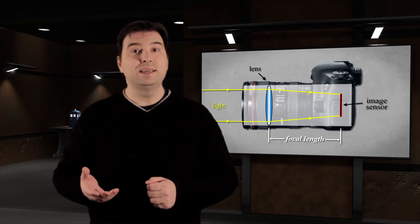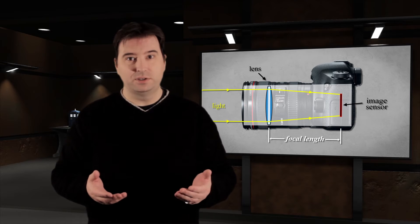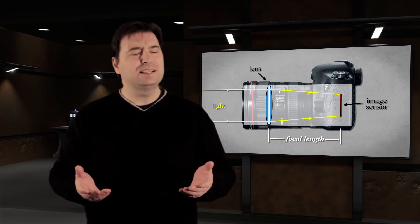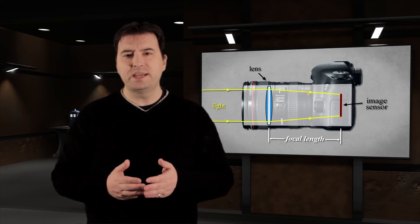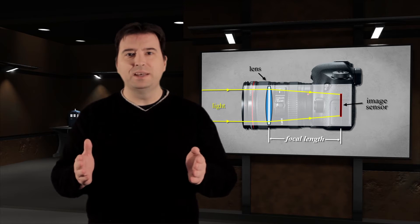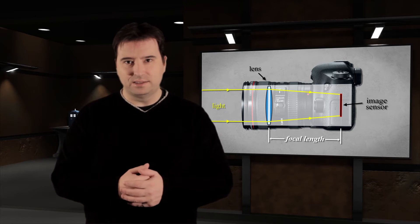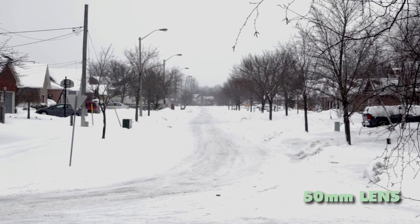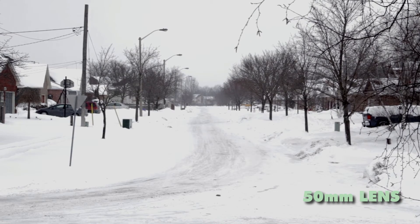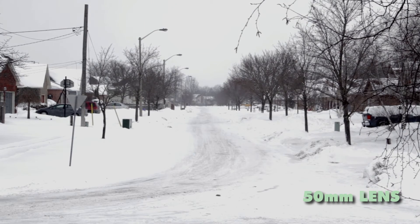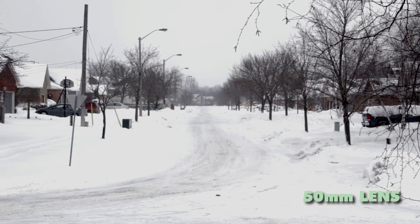Focal length is given in millimeters, and technically speaking it represents some measurement inside of the lens. For our purposes, it's enough to know that a 50mm lens is the closest to what the human eye can perceive, and for this reason it's called a normal lens.